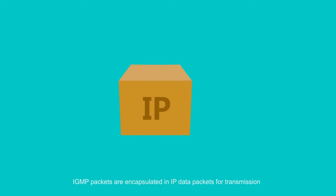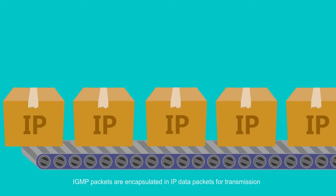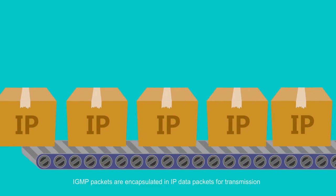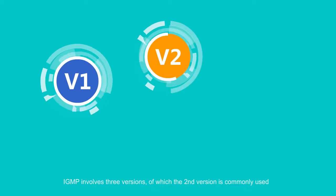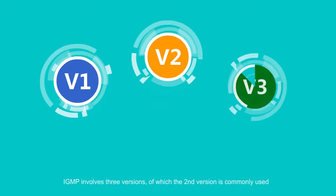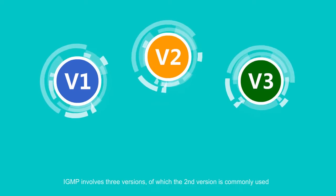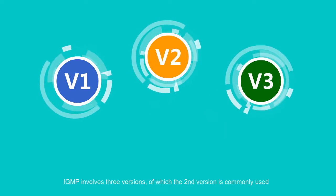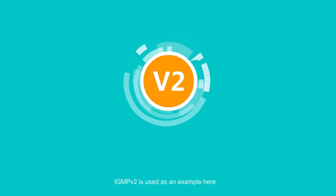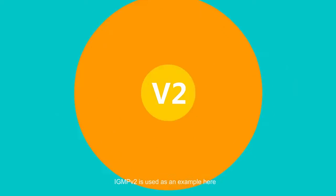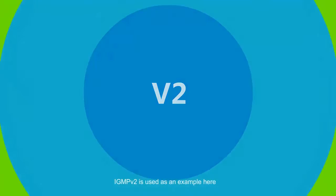IGMP packets are encapsulated in IP data packets for transmission. IGMP involves three versions, of which the second version is commonly used. IGMPv2 is used as an example here.